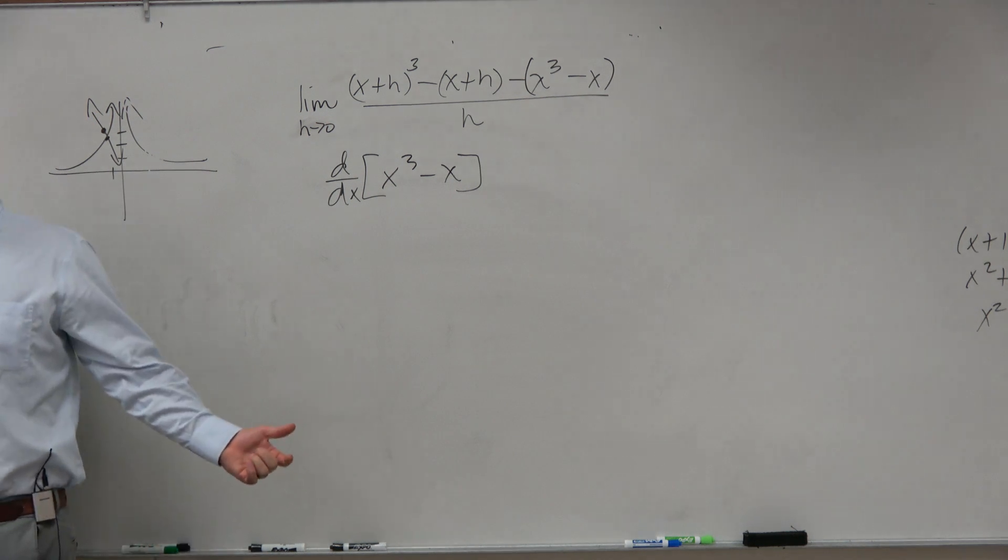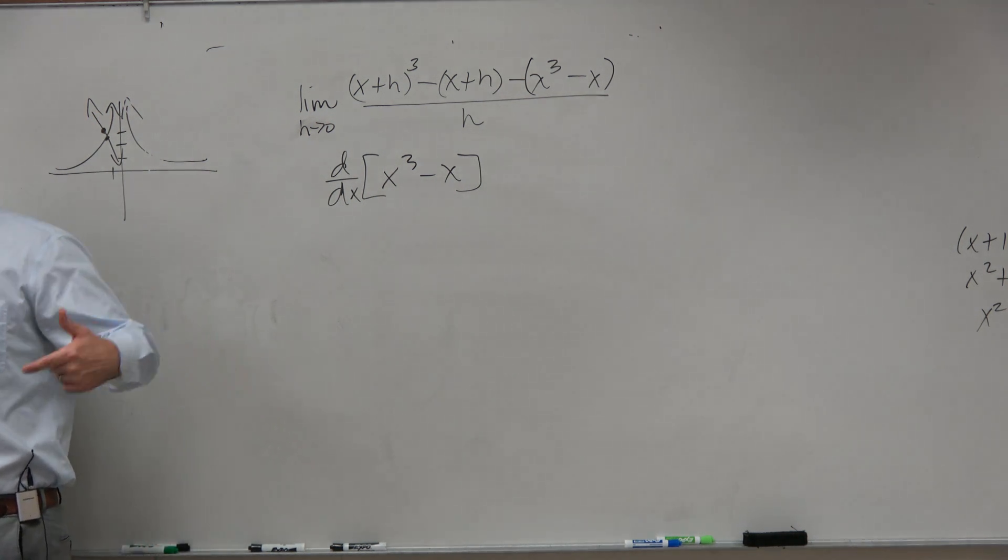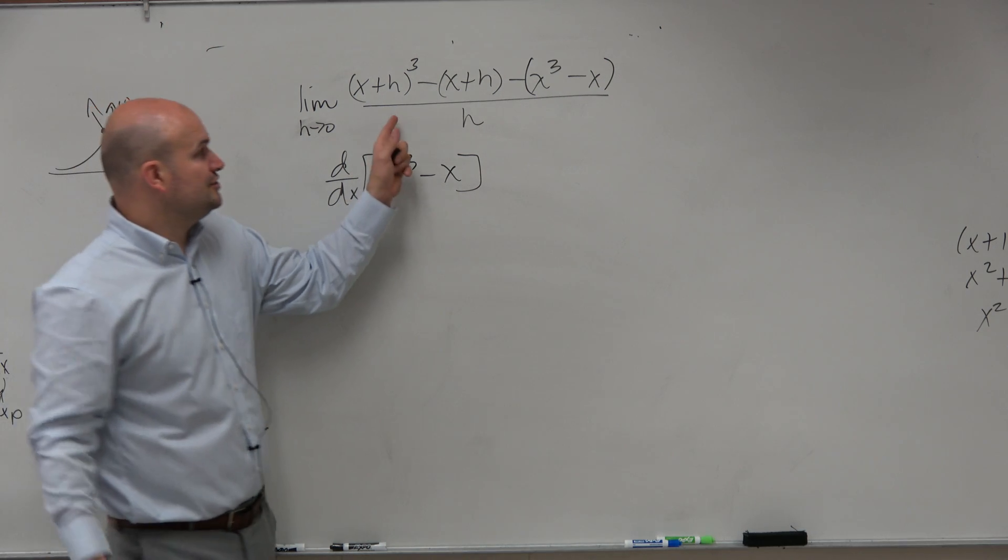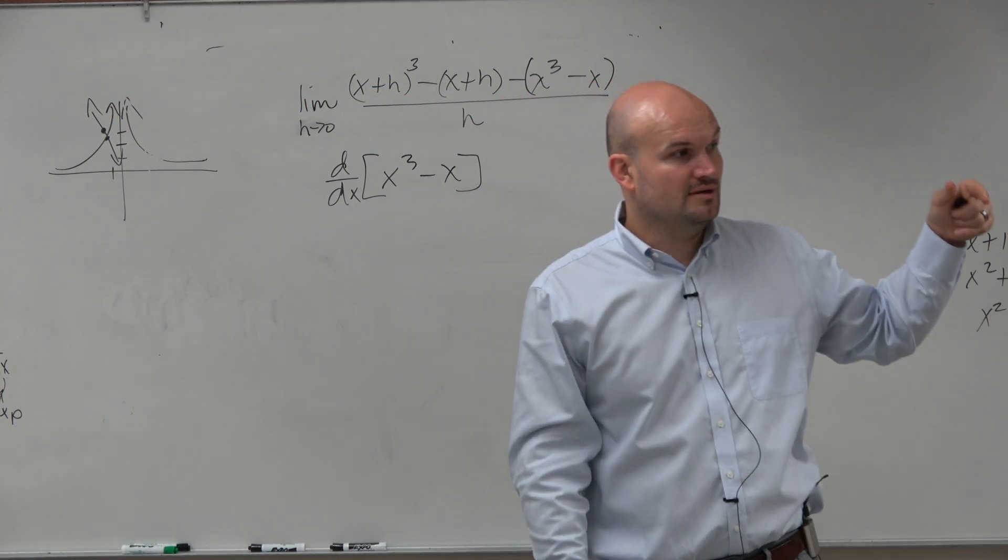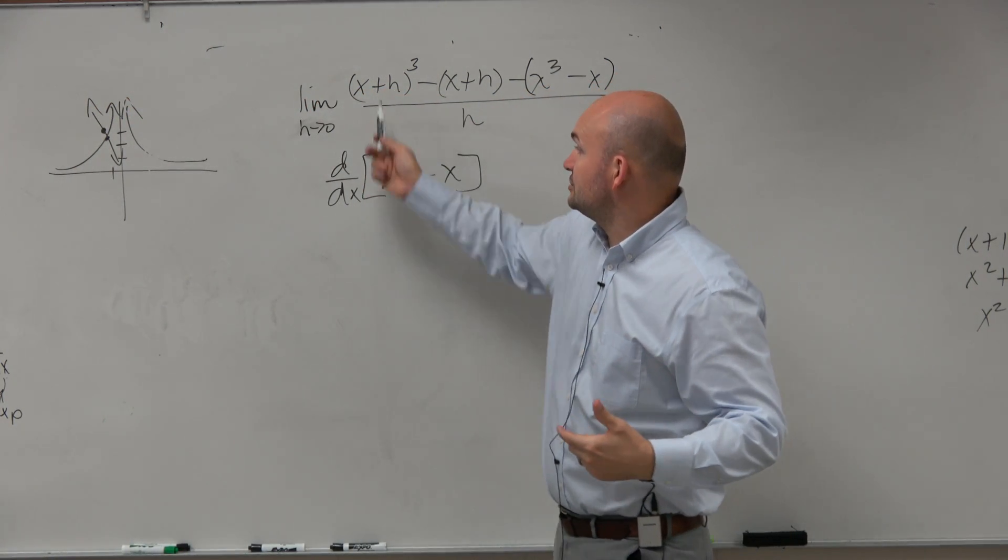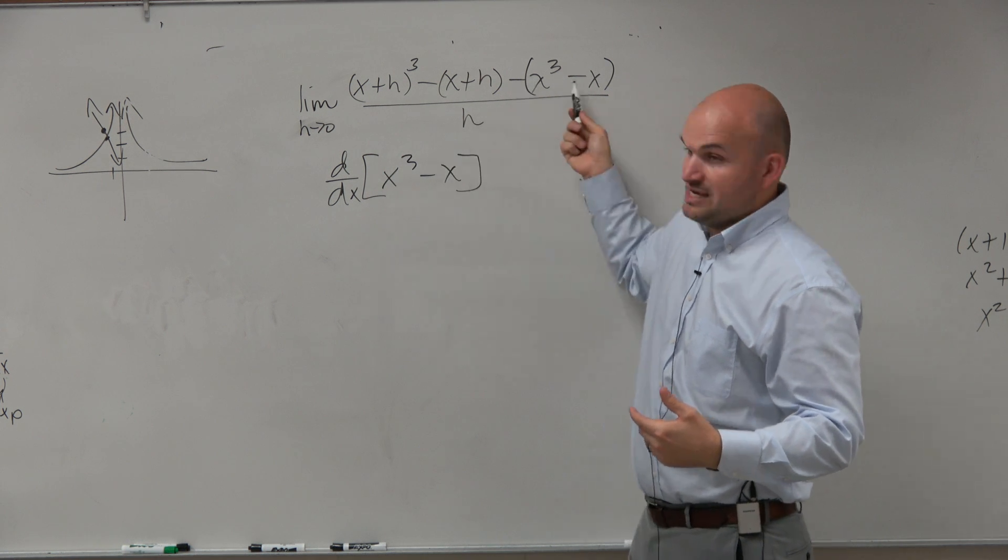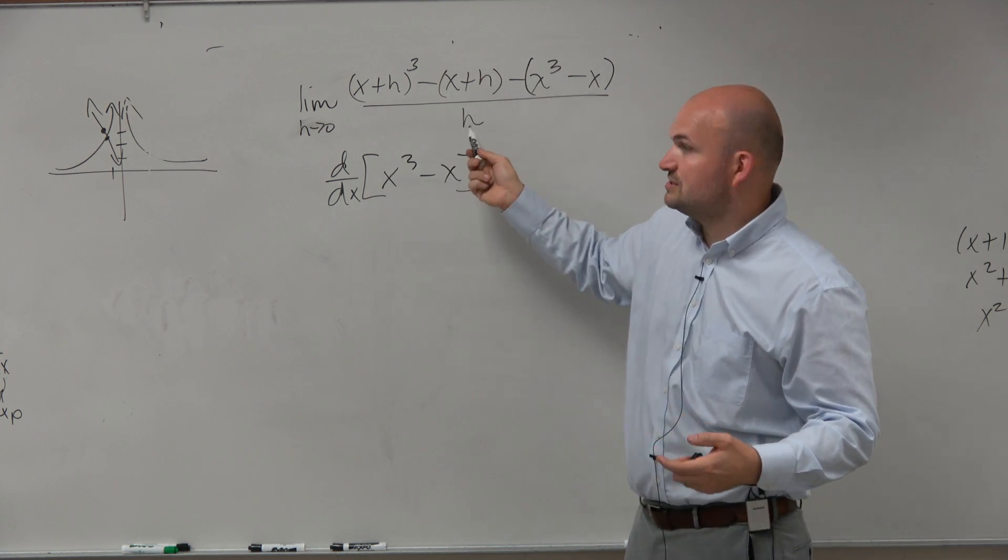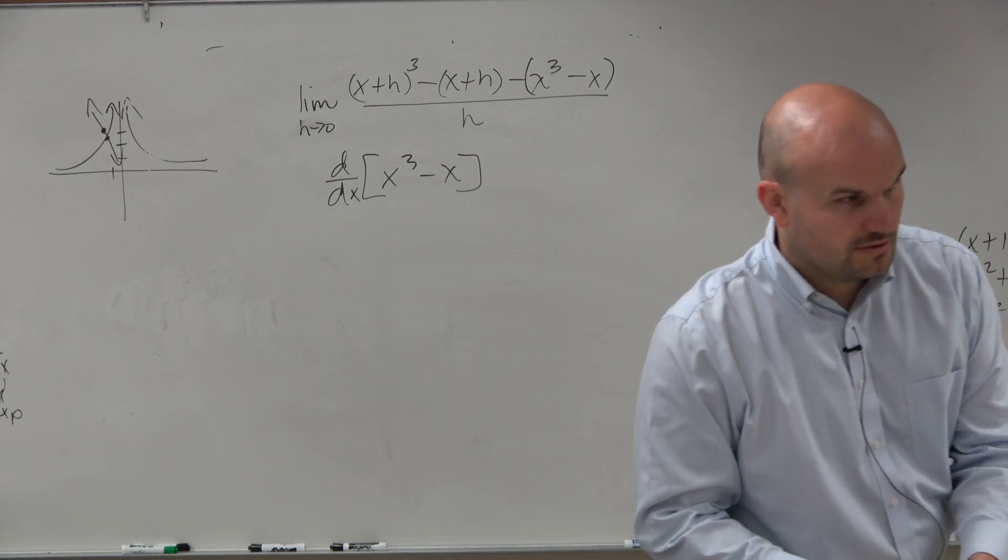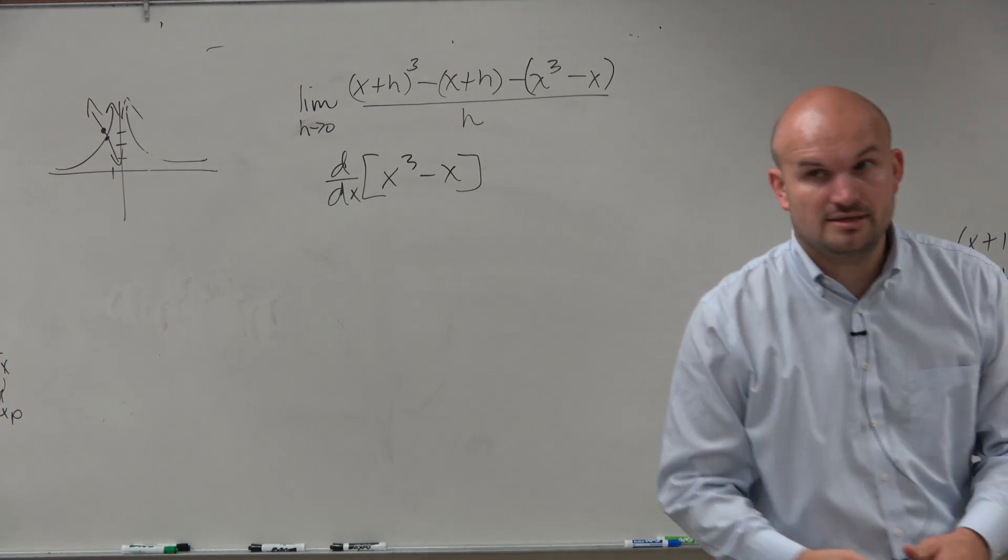If you were to find the definition of the derivative, you would do f of x plus h minus f of x over h. Do you guys kind of see how we did that? We changed all the x's to x plus h's, and then we subtracted the function, and then we just divided it by h. Do you guys see that? Yes?